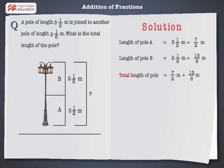Total length is equal to 7 by 2 meters plus 13 by 6 meters, which equals 21 plus 13 by 6 meters.